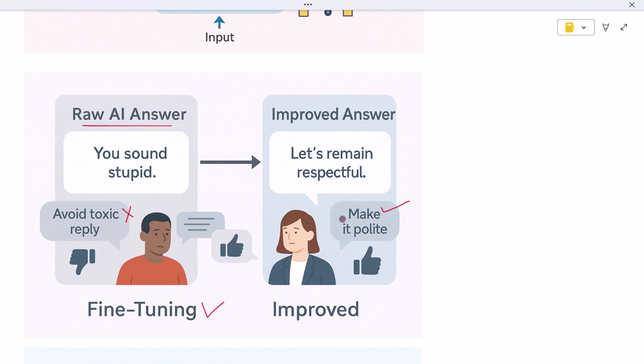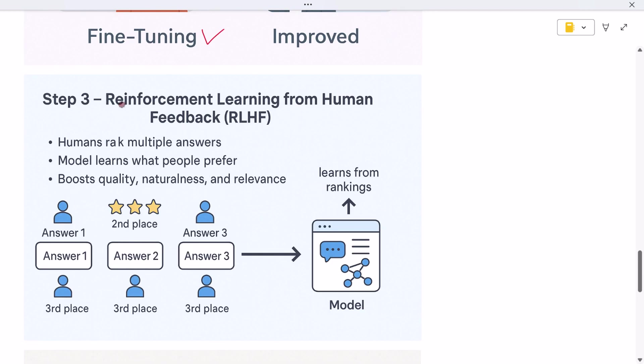You can think of it like teaching a very smart student how to behave in a real conversation. But there's one more step. After fine-tuning, the model goes through something called reinforcement learning. This part is based on human feedback too.